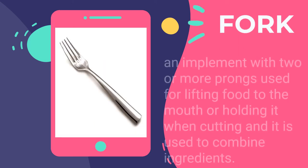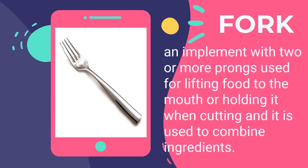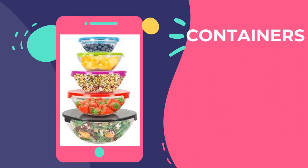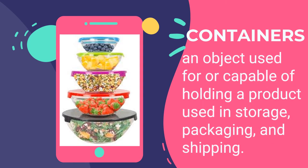The kitchen fork is an implement with two or more prongs used for lifting food or holding it when cutting, also used to combine ingredients. In preparing appetizers, small cocktail forks are ideal for any occasion, making it easy to eat seafoods, finger foods, or appetizers. Containers are objects used for holding products in storage, packaging, and shipping. Shallow containers are perfect for appetizers, finger foods, desserts, and cut fruits.